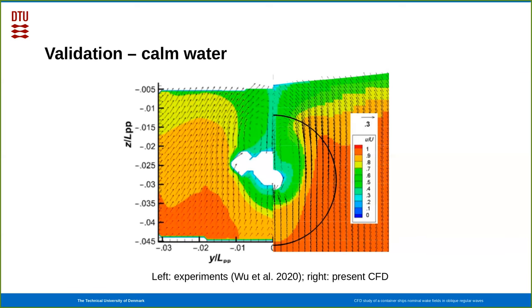Then we can do validation, so we can compare first the wake fraction with calm water, the steady state. On the left you see the experiments from Rue et al. in 2020, and on the right are the present CFD calculations. The colors are the out-of-plane velocity, and the vectors are the in-plane velocity, and you see fair good agreement between these.